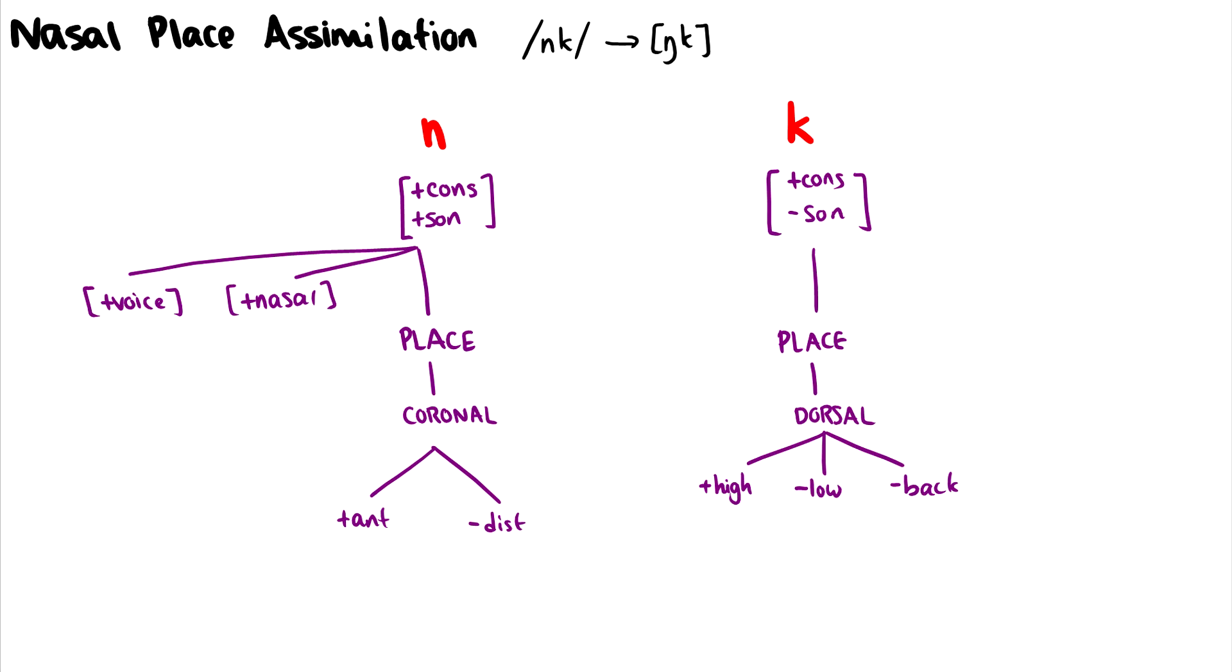Now with the K, the K is a consonant, but it's not sonorous. It's dorsal, it is plus high, minus low, and minus back. So how can we capture nasal place assimilation with this N and this K? In other words, how can we make this NK go to an ŋK, the velar N and a K?